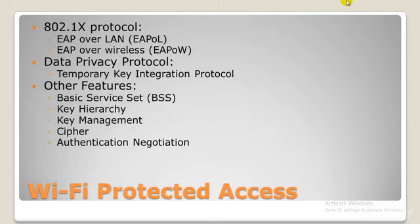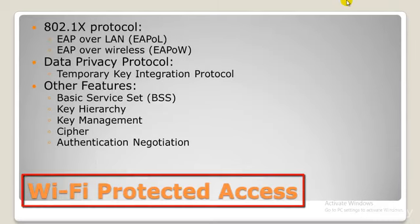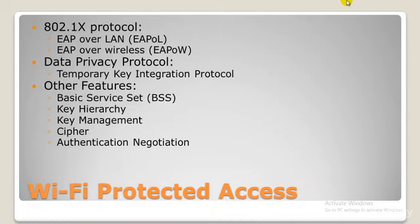Now coming to WPA — the full form is Wi-Fi Protected Access — and you can probably already guess WPA2, that's Wi-Fi Protected Access 2. WPA was the Wi-Fi Alliance's direct response and replacement to the increased vulnerabilities of the WEP standard. It was formally adopted in 2003, a year before WEP was officially retired. The most common configuration is WPA-PSK, that is the Pre-Shared Key. The keys used by WPA are 256-bit, a significant increase over the 64 and 128-bit keys used in WEP.